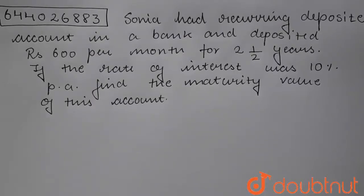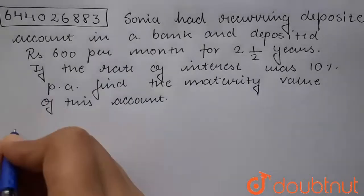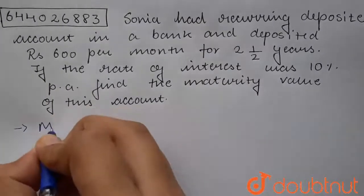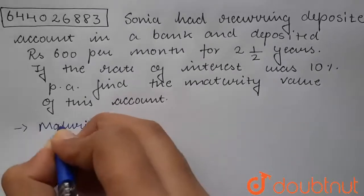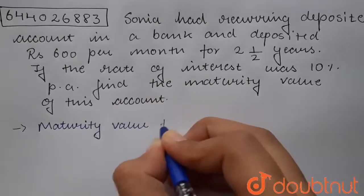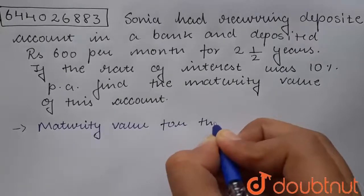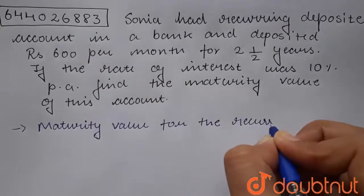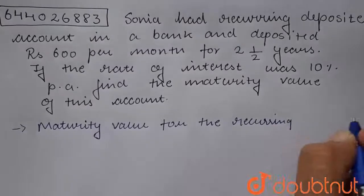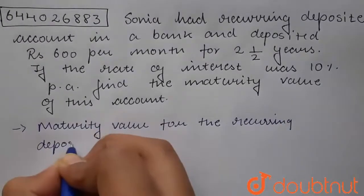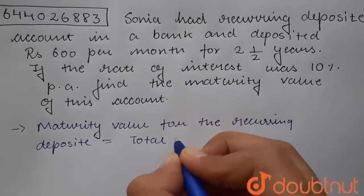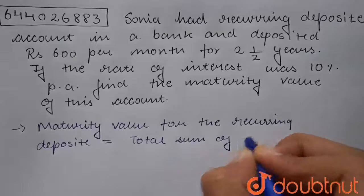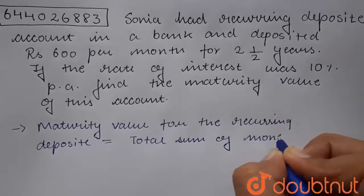In this question, we are asked to find the maturity value of the account. So let us start the solution. Maturity value for the recurring deposit will be equal to the total sum of money deposited